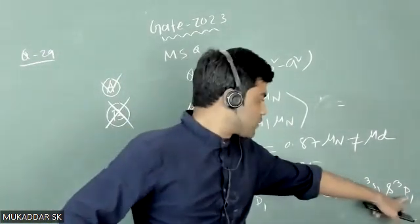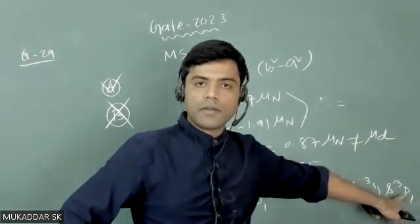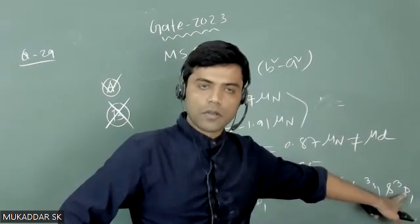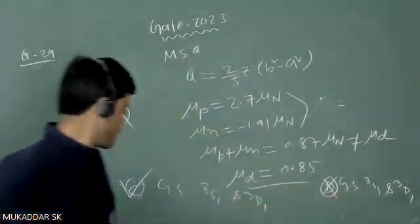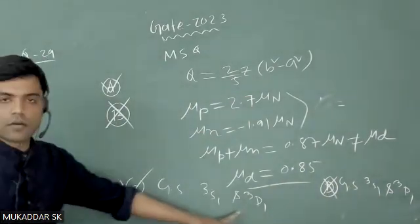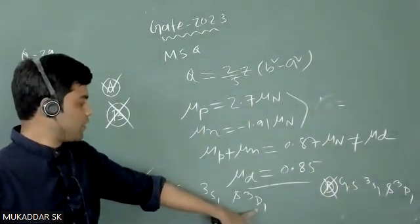The parity of a deuteron is even. That's why this ground state cannot be P orbit because of the even parity of deuteron. So this option is not correct. The ground state is actually 3S₁ and 3D₁, perfectly fine, no problem with parity.